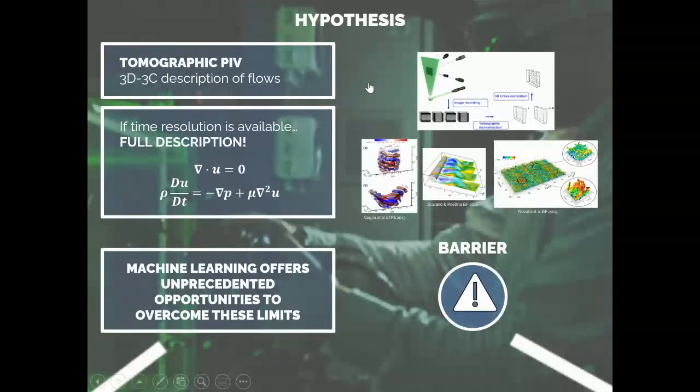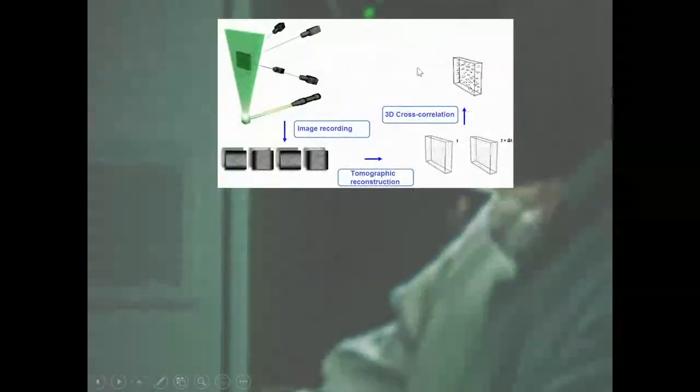Tomographic PIV is a relatively recent technique. It's getting into mature states. It's about 10 to 15 years old. The idea of tomographic PIV is relatively simple. You just need particles that seed the flow. So very small micrometric particles, which are tracked with the accuracy of the flow.